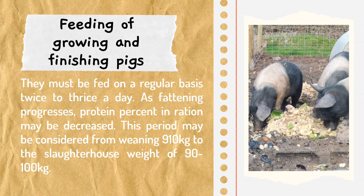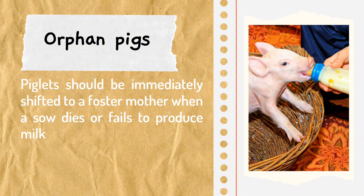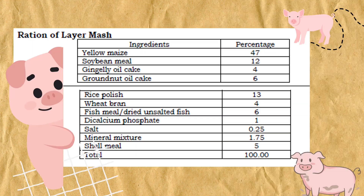For feeding of growing and finishing pigs, they must be fed on a regular basis, twice to thrice a day. As the fattening process progresses, the protein percentage in the ration may be decreased. For orphan piglets, they should be immediately shifted to a foster mother when a sow dies or fails to produce milk. This also covers the ratio of layer mash.